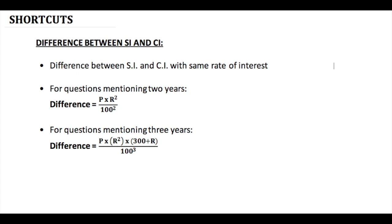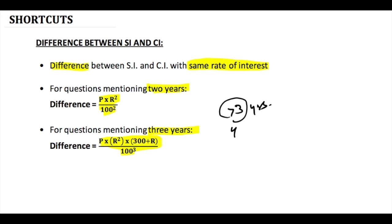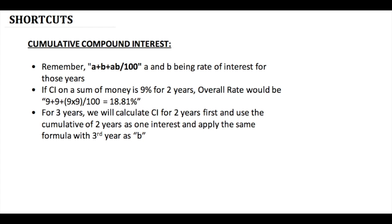The second shortcut is the difference between CI and SI. In certain questions you are asked to find the difference between simple and compound interest with the same rate of interest. The formula for two years is P into r² upon 100². For three years it is P into r² into (300 + r) divided by 100³. This shortcut is only applicable for two and three years — beyond three years you must use the longer method.